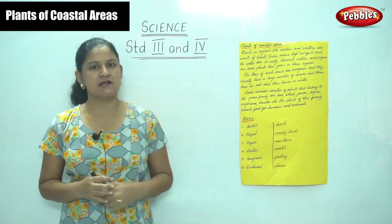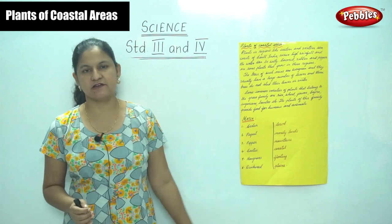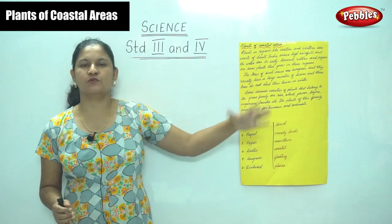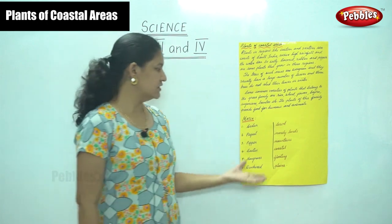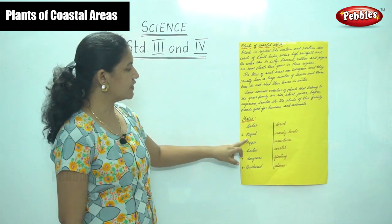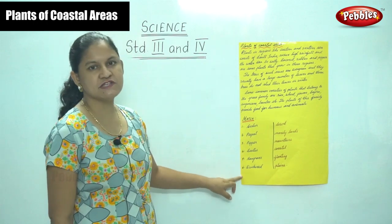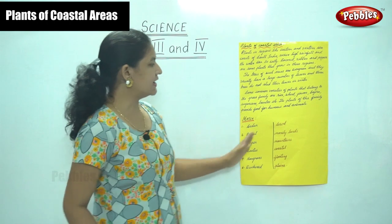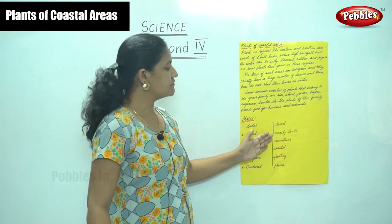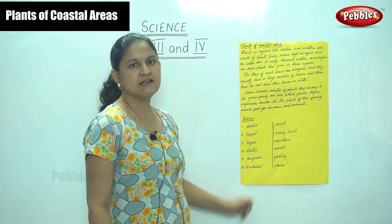Now a small exercise — we are going to match the trees with their area, to recollect what we have learned so far. On one side we have: siddha, peepal, pepper, cactus, mangroves, and duckweed. On the other side we have: desert, marshy lands, mountains, coastal, floating, and plains.